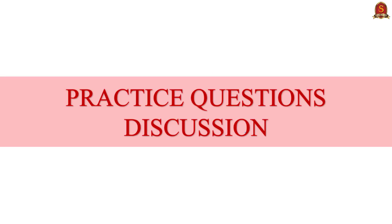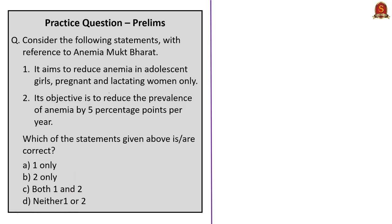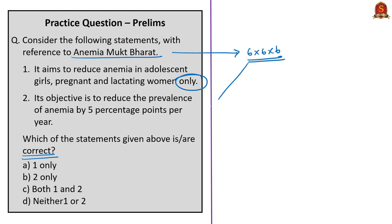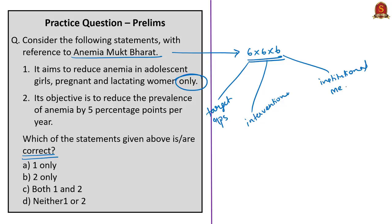In the practice question session, the first question is about Anemia Mukt Bharat Strategy. Statement one says it aims to reduce anemia in adolescent girls, pregnant and lactating women only. This is incorrect — the strategy targets six groups, which include children aged 6–59 months, adolescent girls, adolescent boys, women of reproductive age, pregnant women and lactating women.